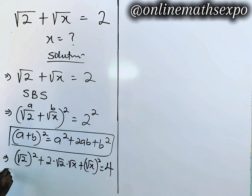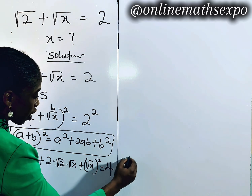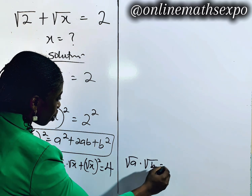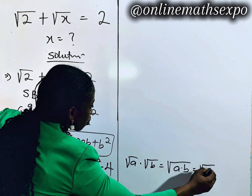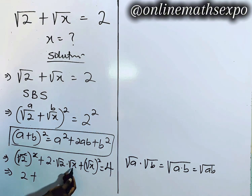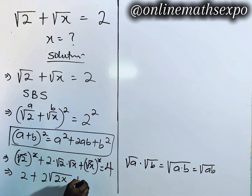Keep solving. The square cancels the square root of 2, giving us 2. For the middle term, remember that root a times root b equals root(ab), so 2 times root(2x). And root x squared gives us x. So we have: 2 + 2√(2x) + x = 4.